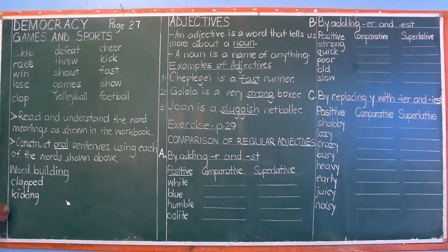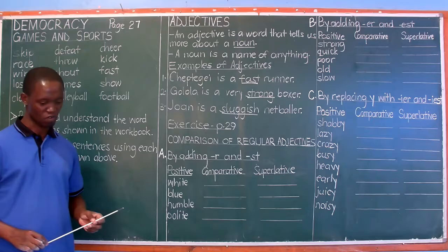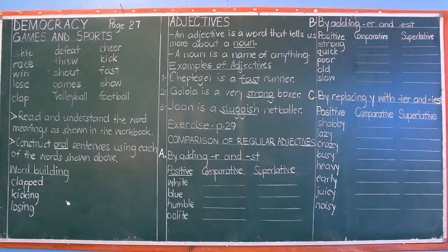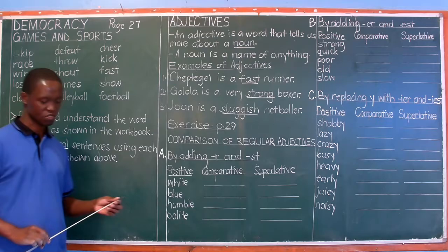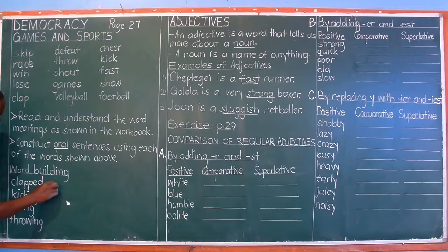We proceed to 'lose'. The -ing form is losing — L-O-S-I-N-G — with a single S and single O. The past tense of lose is 'lost'. Throw has the past tense 'threw' and the -ing form 'throwing'. Then we have a dash, followed by 'winning' with a double N, and 'won' as the past tense. The infinitive form is W-I-N, win.